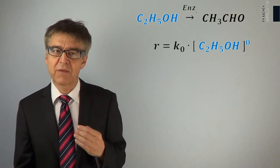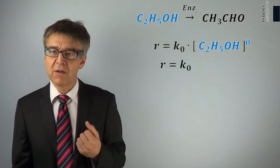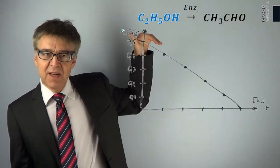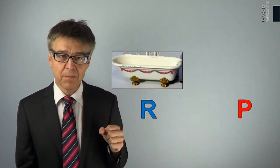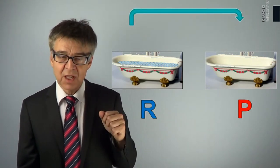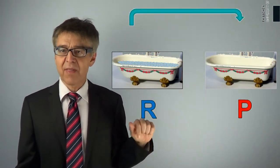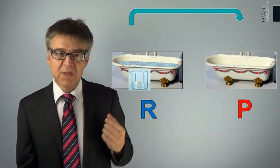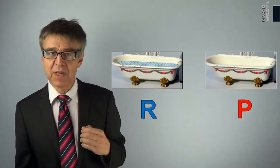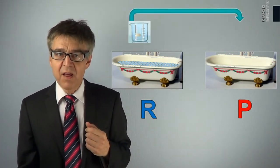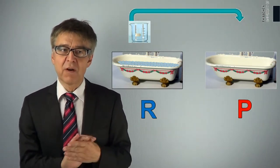In a zero-order reaction, the reaction rate is independent of the concentration of reactants and thus constant for the whole reaction sequence. This means that the concentration of the reactant decreases linearly with time. In a mechanical analogy for a zero-order reaction, we dip a ladle into a container — say a bathtub R — carry an amount of liquid to the right, and empty the ladle into bathtub P. We keep doing so until bathtub R is empty. The level of each bathtub is a measure of the concentrations of R and P respectively. The volume of the transport ladle is a measure of the rate constant K.